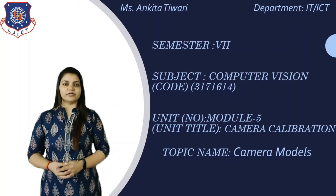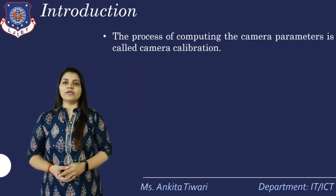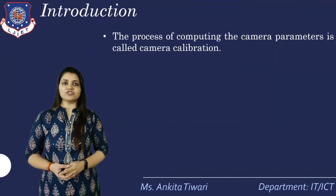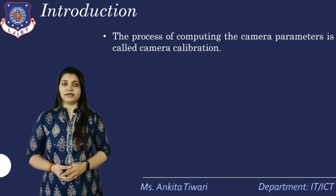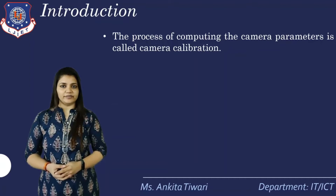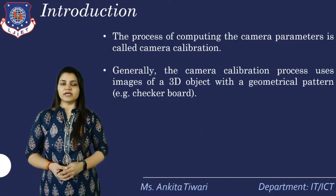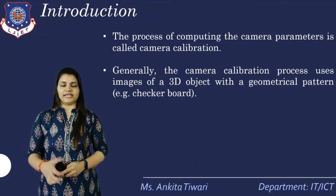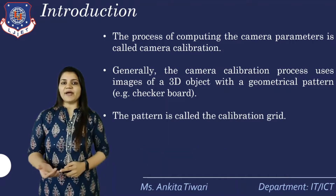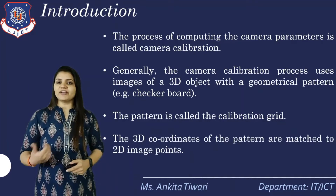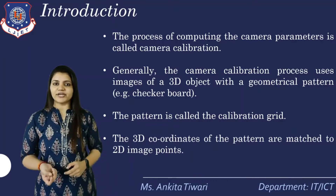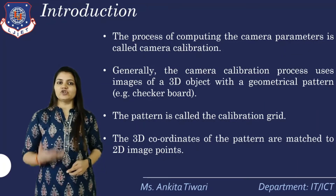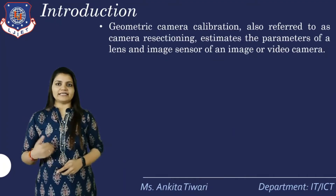The first topic we are going to start in module number 5 is camera models. Initially, what is camera calibration? The process of computing the camera parameters is called camera calibration. Calibration involves using images of a 3D object with a geometrical pattern, for example a checkerboard. This pattern is also called a calibration grid. The 3D coordinates of the pattern have to be matched to the 2D image point, because we need to take that point into our 2D plane to get the output as the image itself.